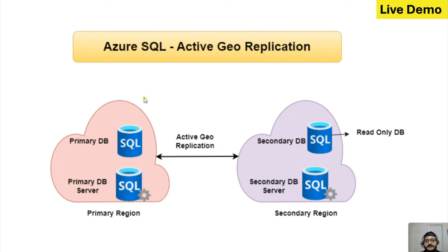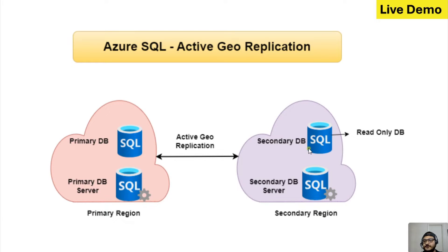Let's understand this with the help of a diagram. Suppose we have a primary region — it could be anywhere, like Central India or anywhere in the world. We create a database server and a database there. When we enable Active Geo Replication, we have to choose a secondary region where database replication will happen. This secondary region should be paired with the primary region, and you can see all paired regions in Microsoft Azure documentation.